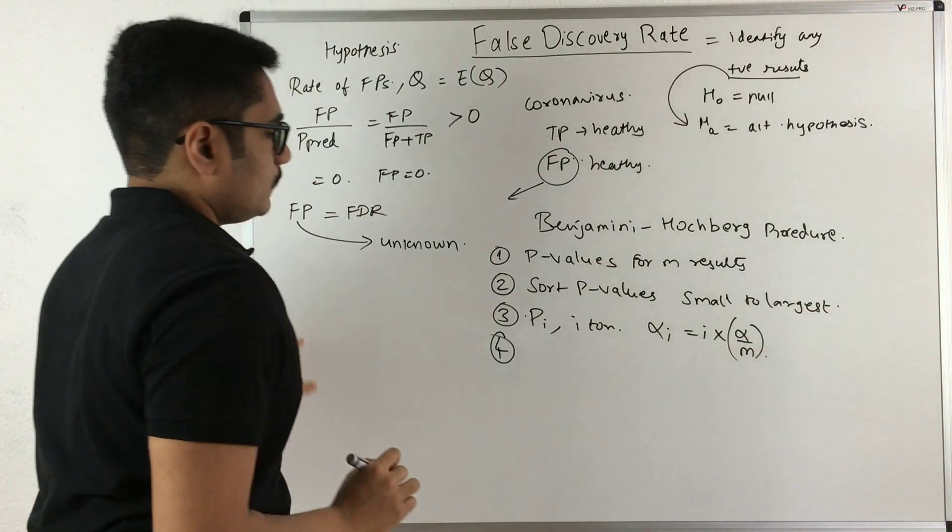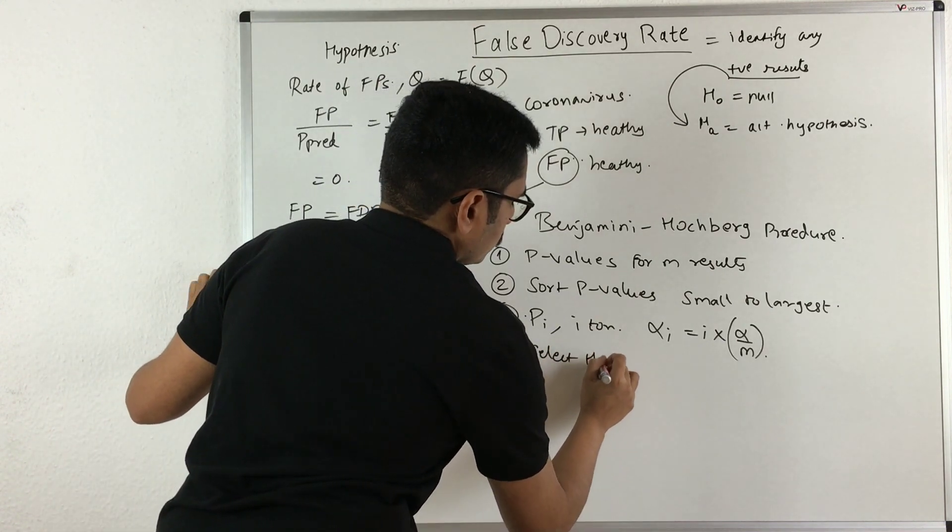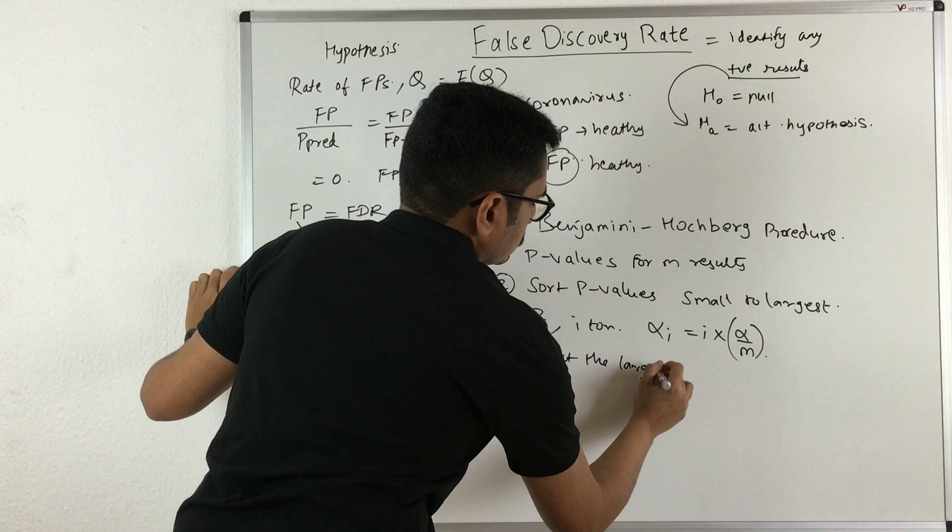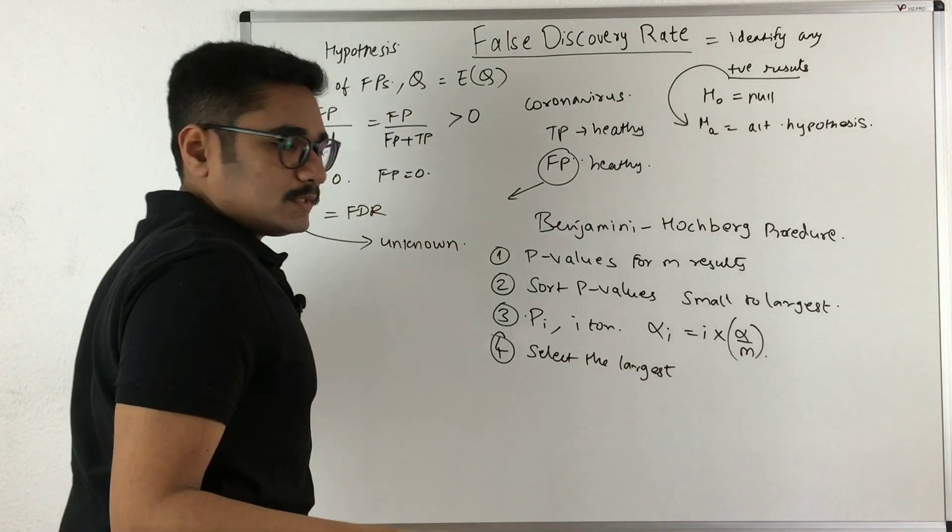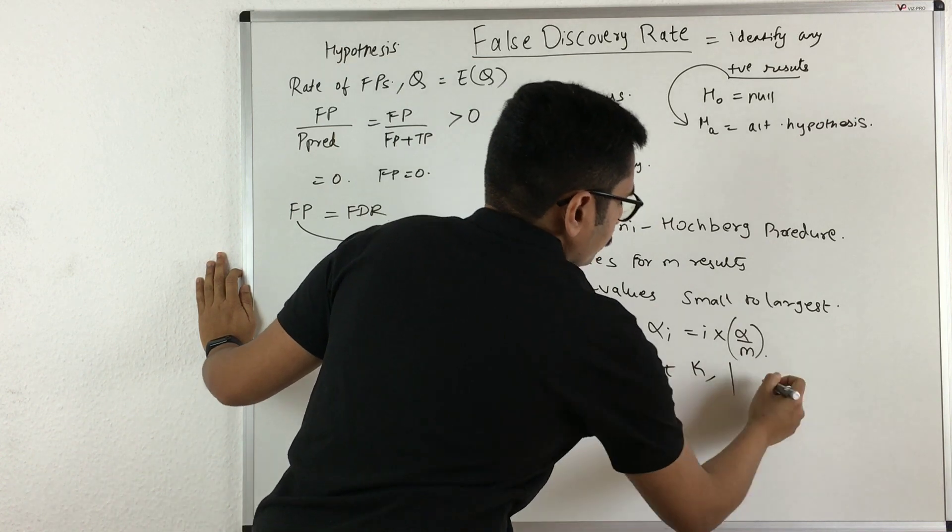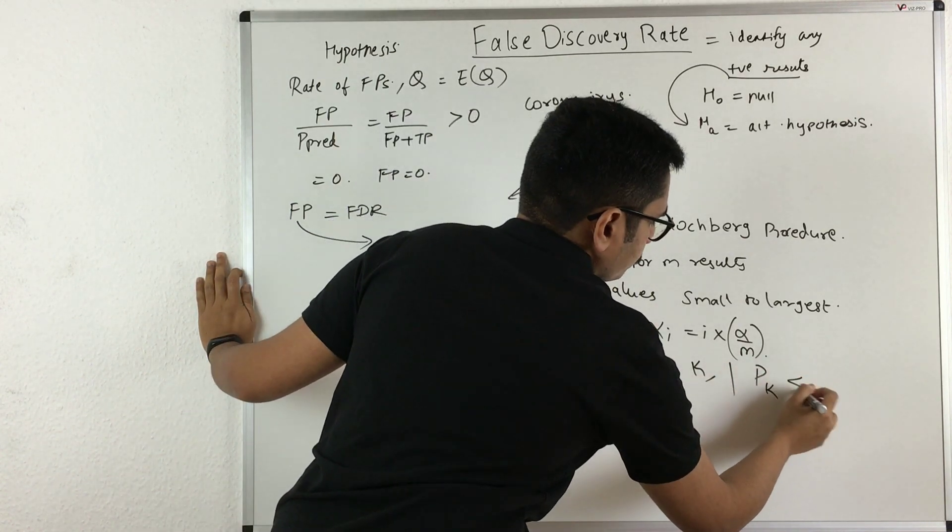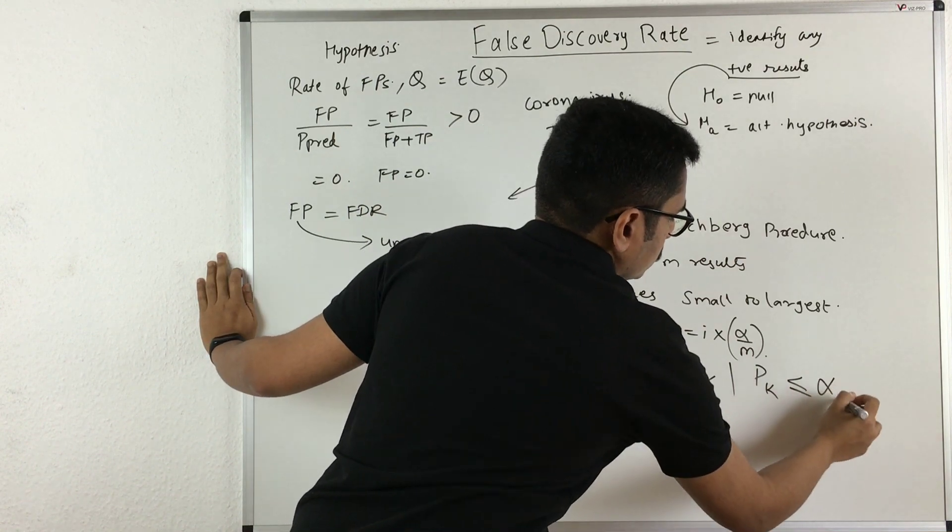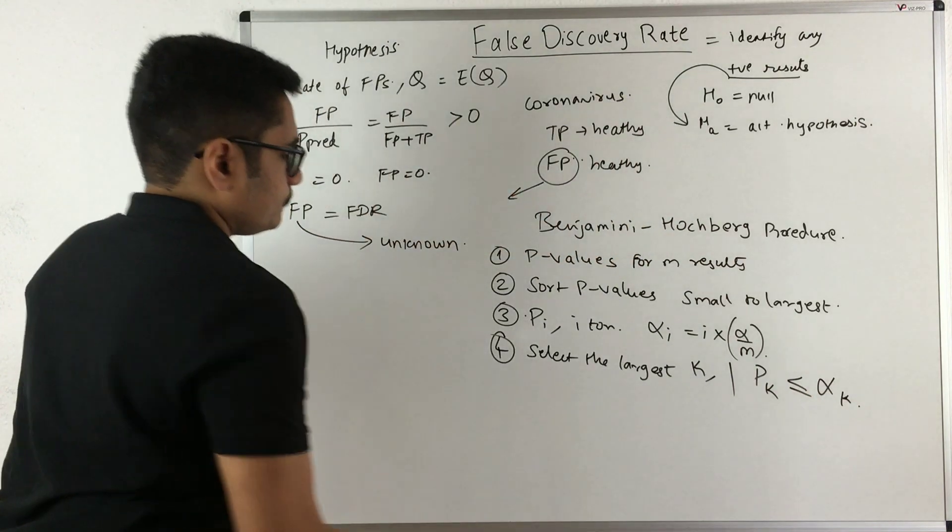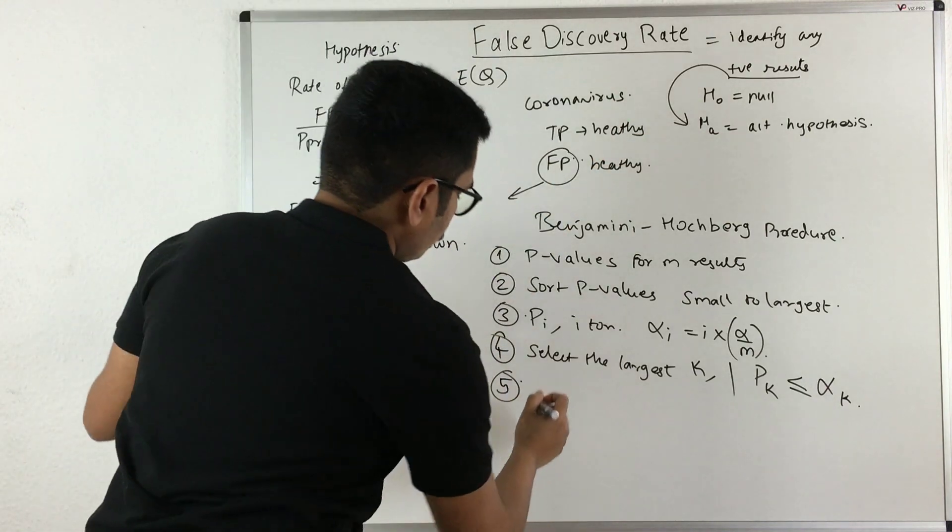The fourth step is to select the largest integer out of those samples. Say we have k such that the kth p-value is less than the kth alpha value. Then you reject the null hypothesis.